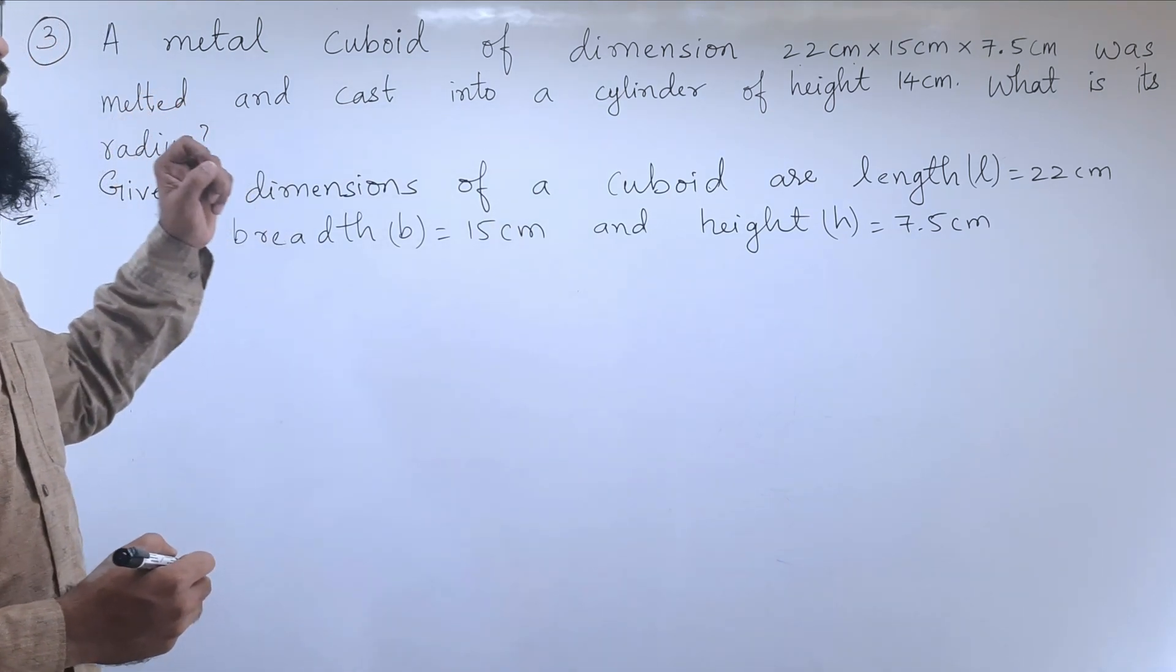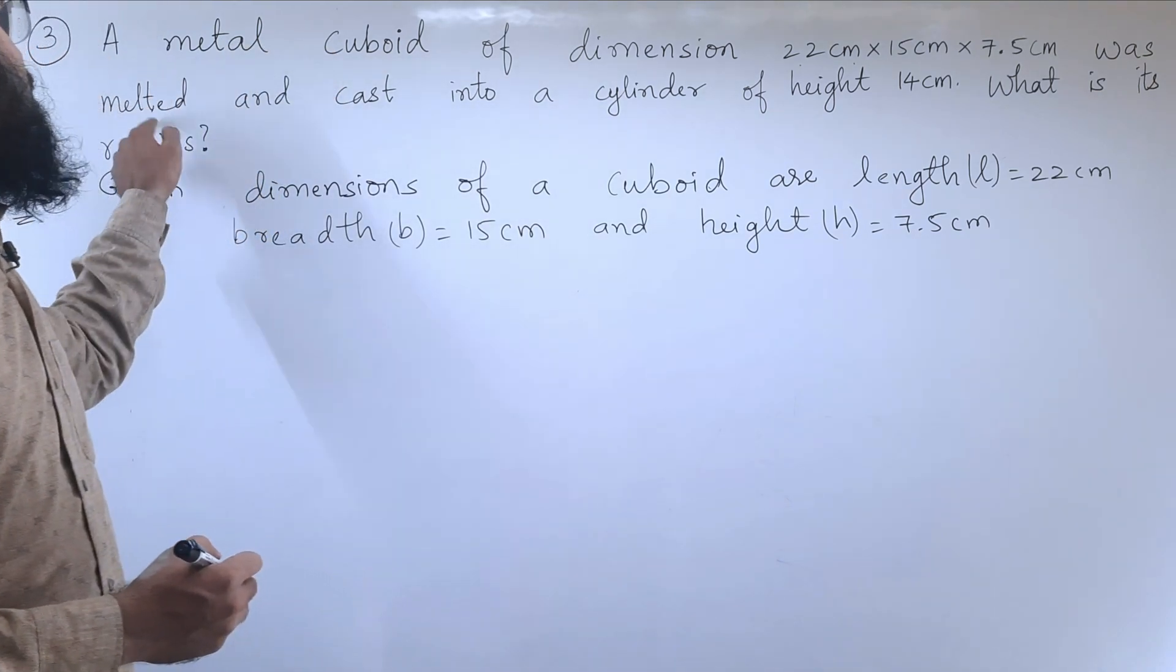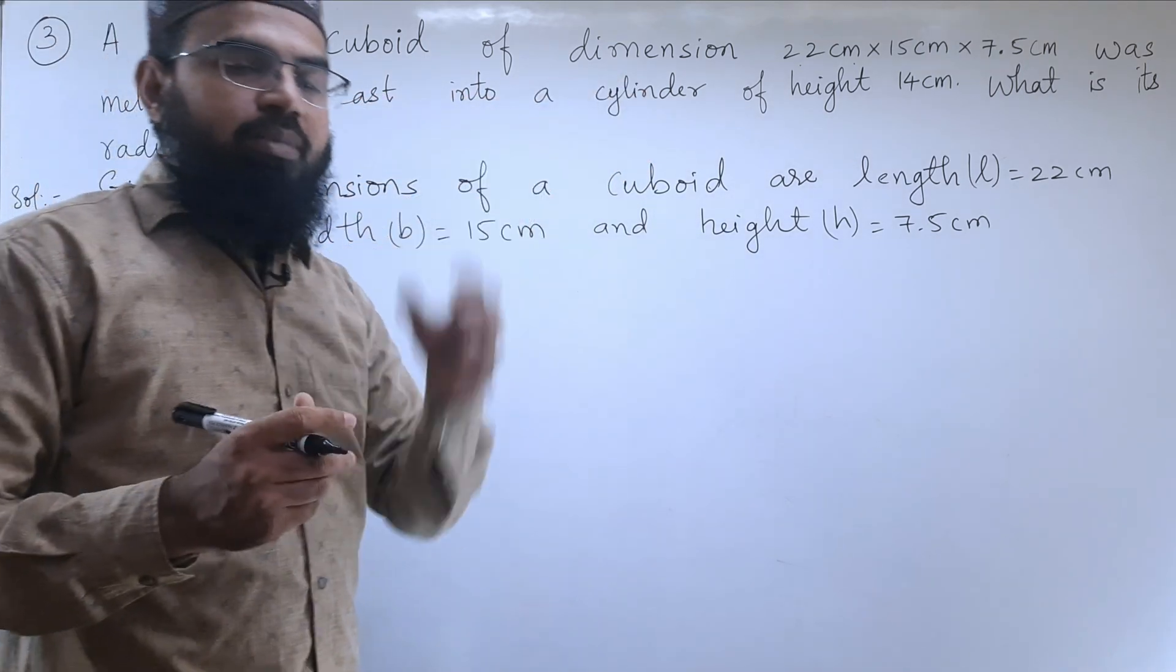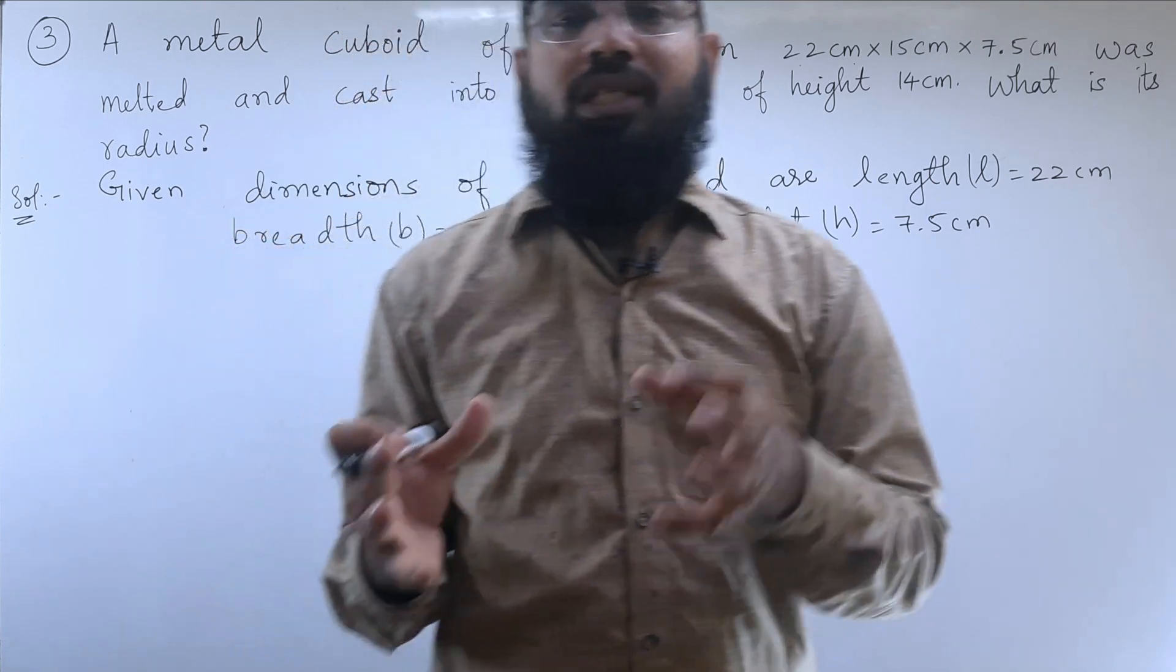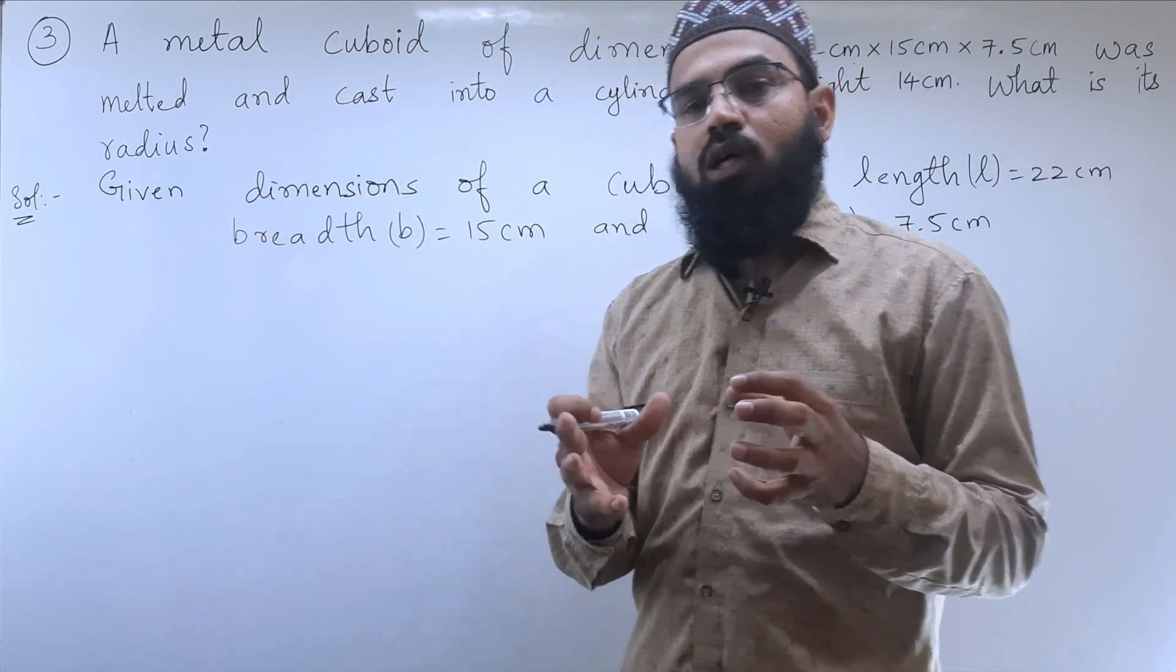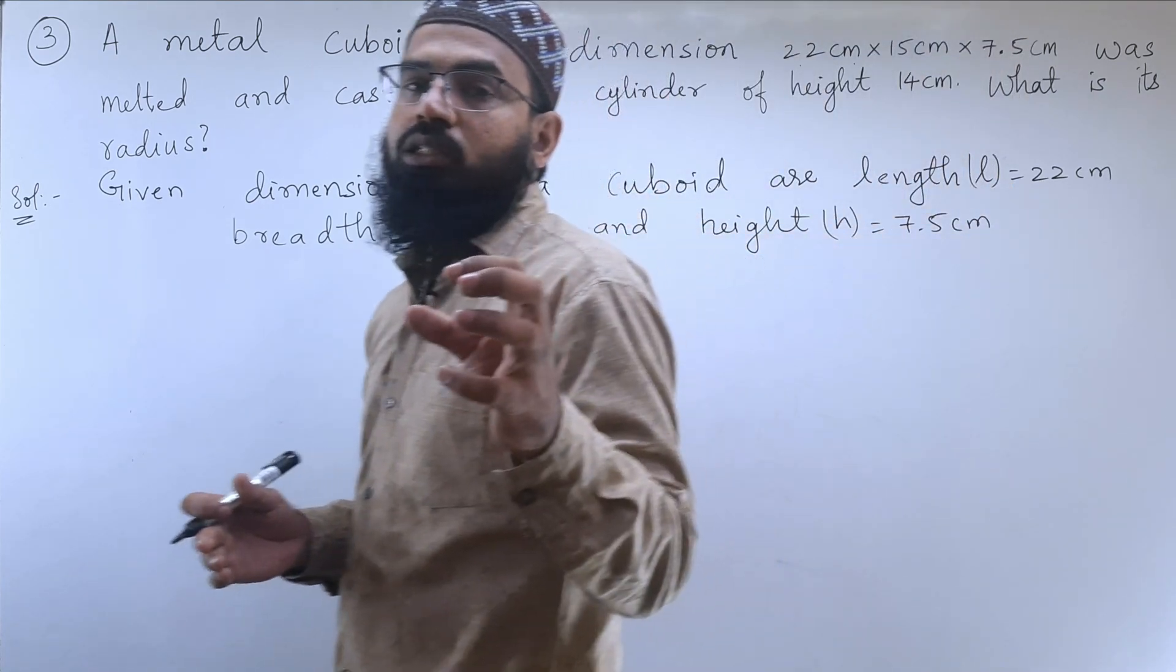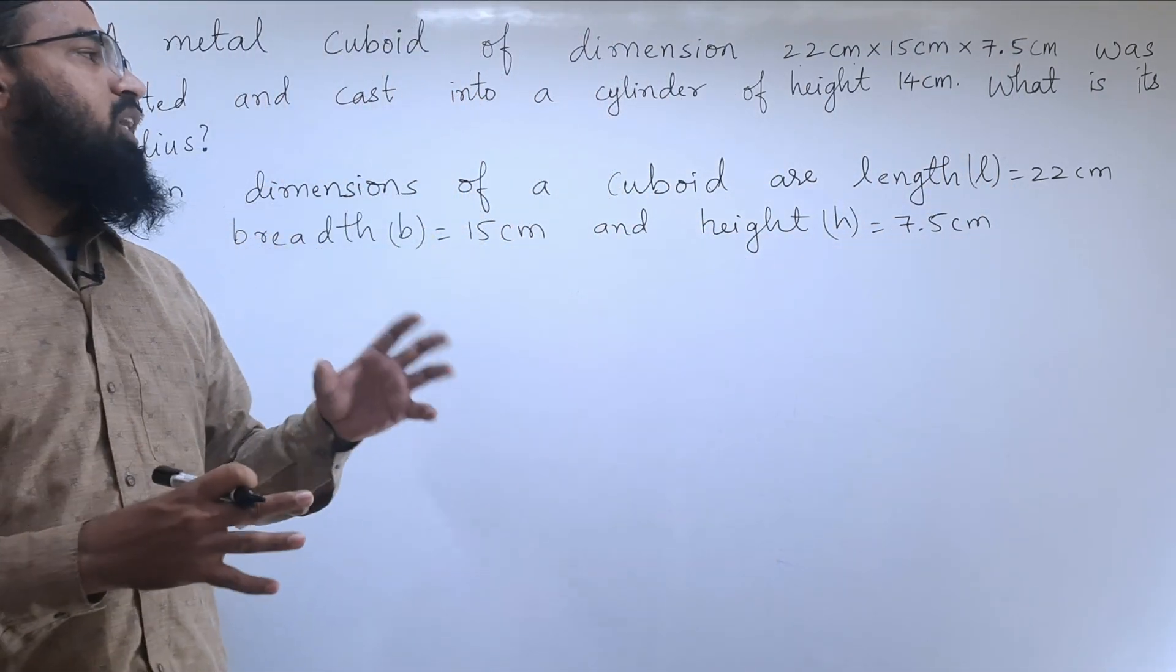Next, they said that the cuboid is melted and casted into a cylindrical shape. That means the volume of the cylinder will be equal to the volume of the cuboid. As it is melting, the volume will be equal.